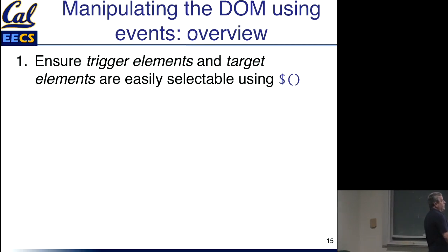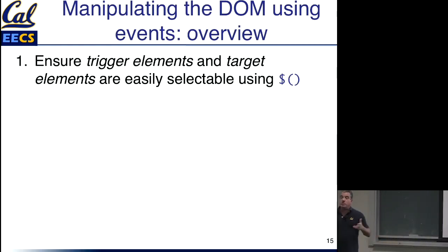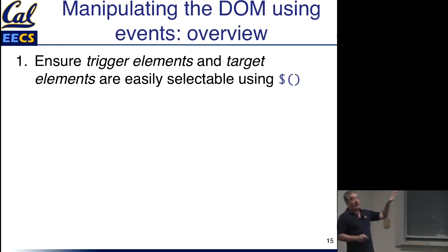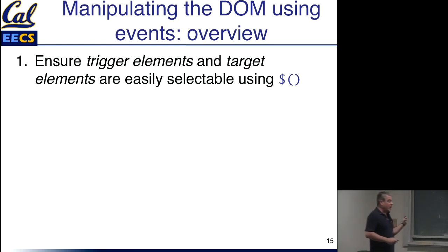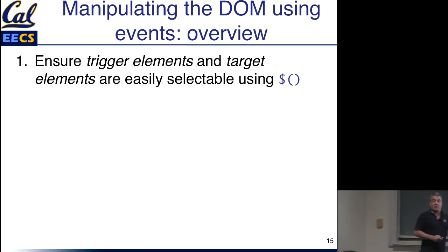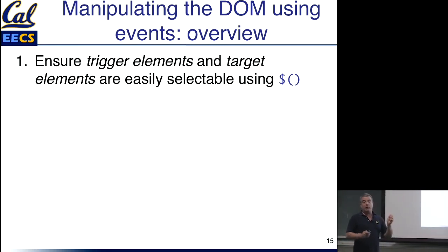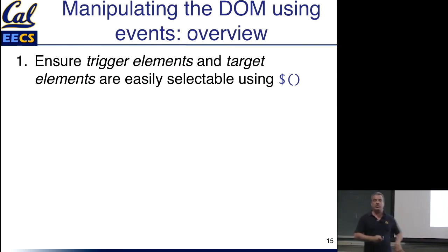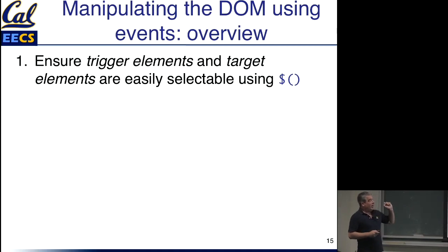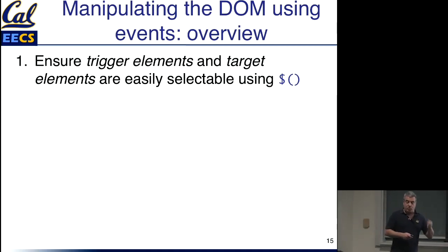Starting with manipulating the DOM — how do you manipulate it? Four-step formula. First of all, if we talk about trigger elements and target elements: trigger elements are the thing that you want to detect whether something happened. So someone clicks on a button, someone fills a value in a form, someone moves focus or moves the cursor into a particular control element.